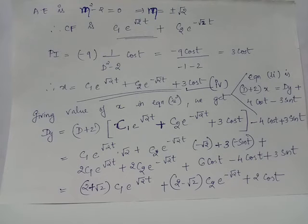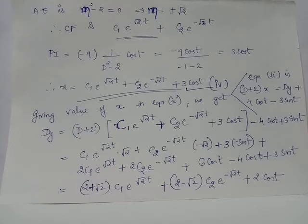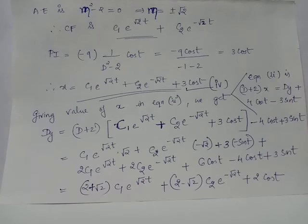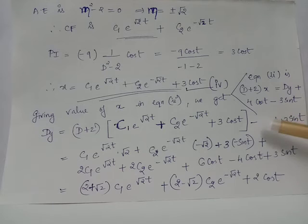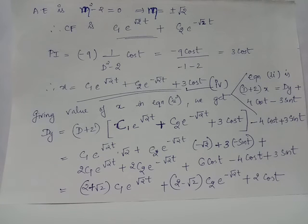To find y, we use equation 2: (D + 2) acting on x equals dy/dt + 4cos(t) - 3sin(t). It follows that dy/dt = (D + 2)x - 4cos(t) + 3sin(t). Substituting the expression for x from equation 4, the operator (D + 2) acts on the RHS of equation 4, and the result is combined with -4cos(t) + 3sin(t) to yield dy/dt.